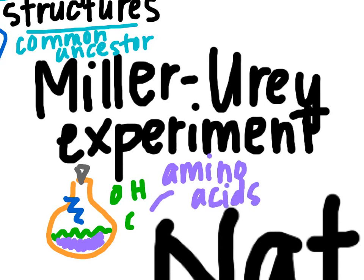The thing being formed were amino acids, which came from the combination of all those elements. So what the Miller-Urey experiment shows us is that you can take simple things and make more complex things. It doesn't necessarily show how life was created, but it does show that you can go from very simple elements to more complex amino acids.